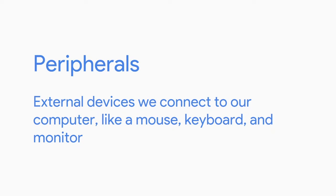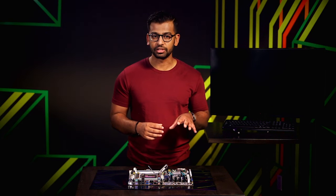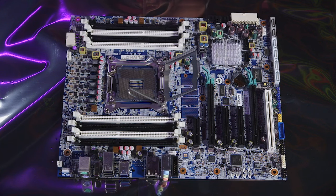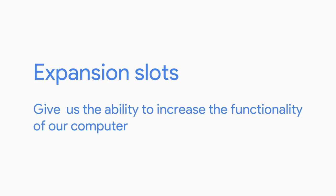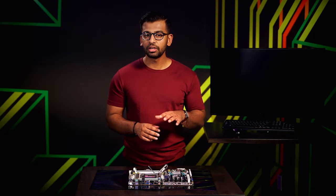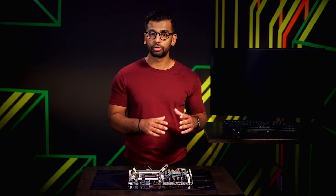The chipset is a key component of our motherboard that allows us to manage data between our CPU, RAM, and peripherals. Peripherals are the external devices we connect to our computer, like a mouse, keyboard, and a monitor. In addition to the chipset, motherboards have another key characteristic: expansion slots. Expansion slots give us the ability to increase the functionality of our computer. If you wanted to upgrade your graphics card, you could purchase one and just install it on your motherboard through the expansion slot. The standard for an expansion bus today is PCI Express, or Peripheral Component Interconnect Express.